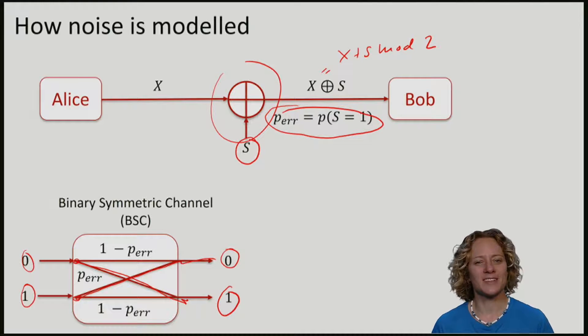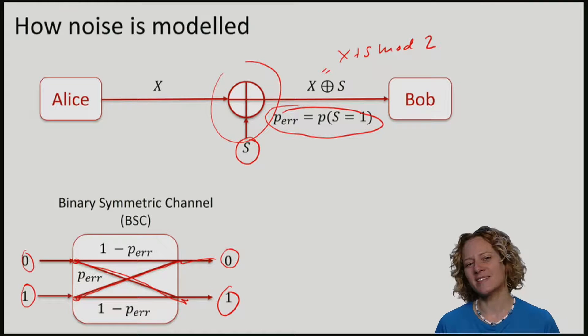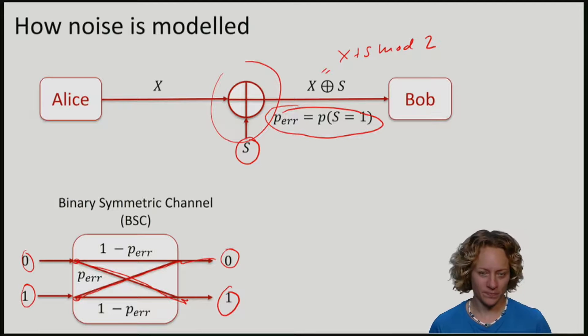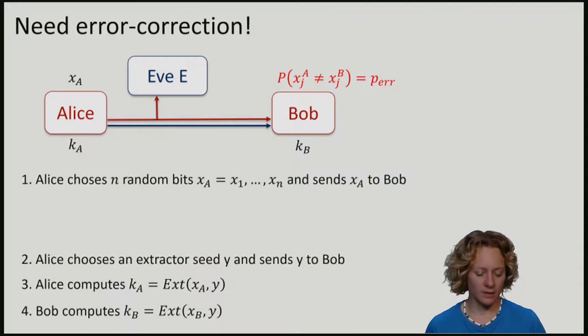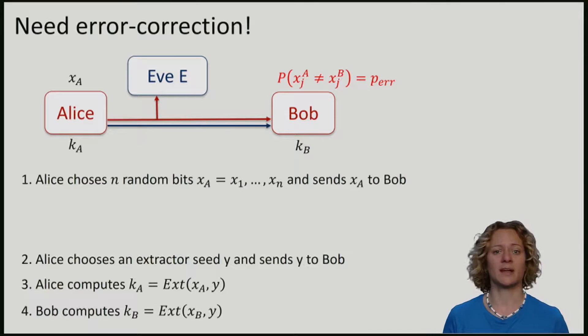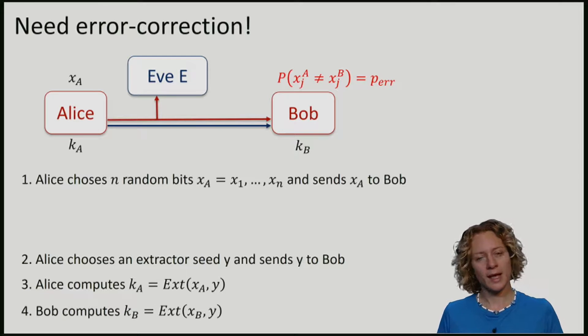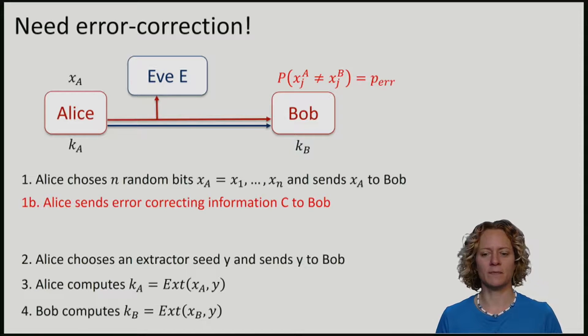So how can we fix our protocol to deal with such noise? It's clear that we need some form of error correction. We will change our protocol by adding an extra step. Alice still chooses random bits and sends them to Bob, but now she will send some extra information, some error-correcting information C to Bob.